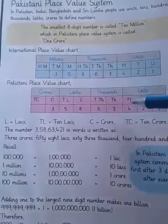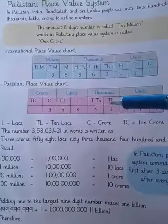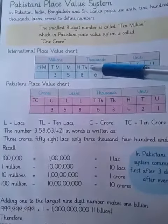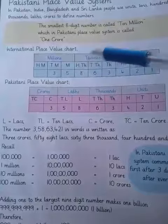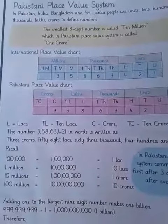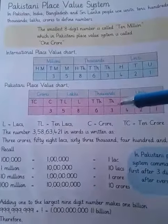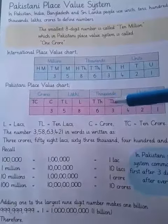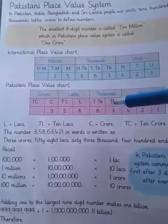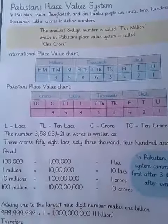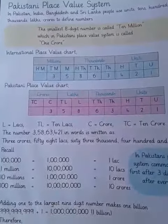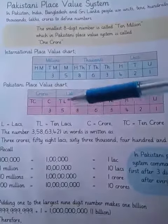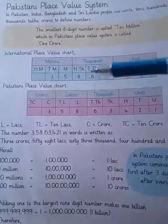In the international system there are three place values for thousands: thousands, ten thousands, and hundred thousands. But in the Pakistani place value system, there are only two places for thousands: thousand and ten thousand. Then there is a comma, followed by lakh and ten lakh — two place values for lakh.